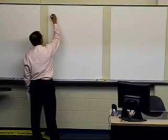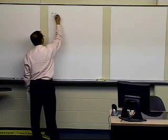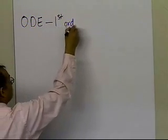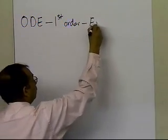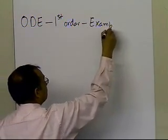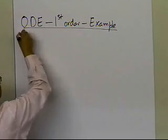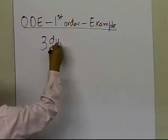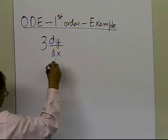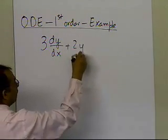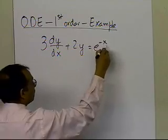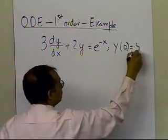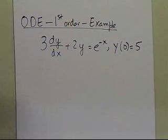In this one, we will look at an example of an ordinary differential equation. We'll look at the first-order ordinary differential equation and try to find an exact solution. So let's take an example: 3 times the first derivative of y with respect to x, plus 2y, is equal to e to the power minus x, and you are given the initial condition y at 0 equal to 5.